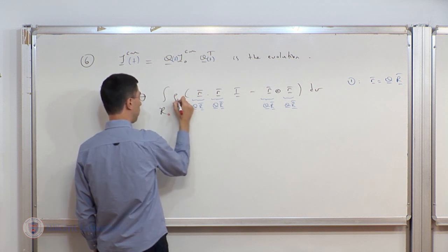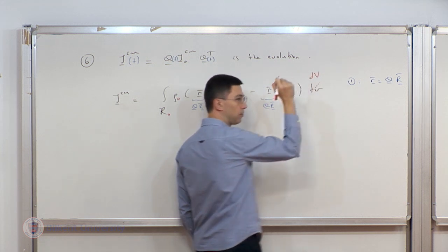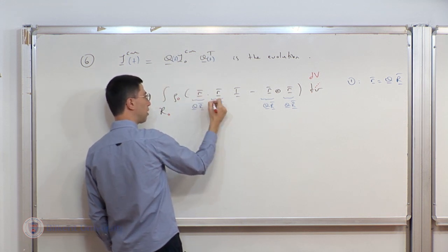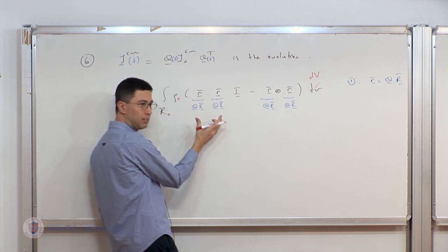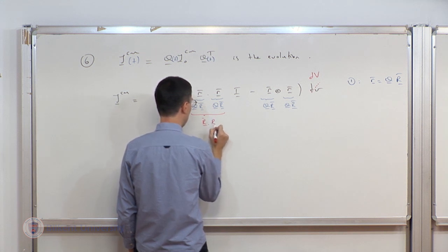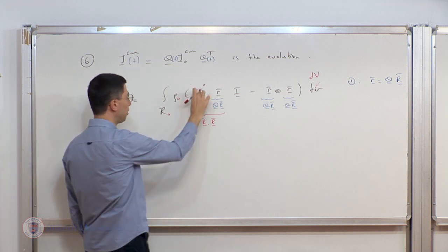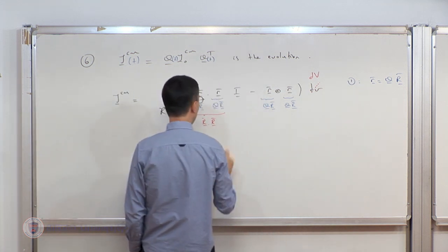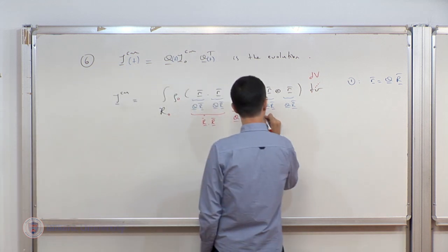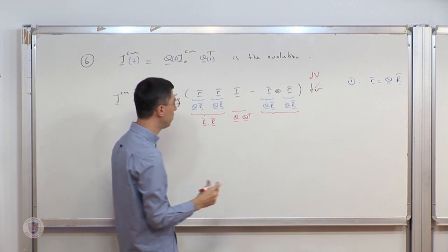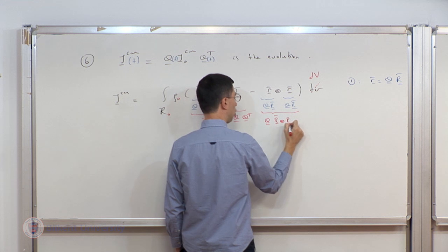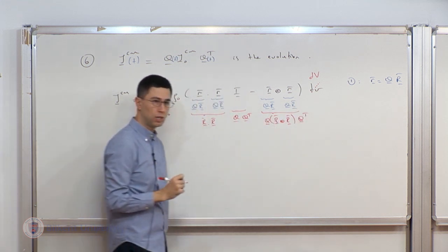I'll put rho-naught and d-capital-V there. Then I notice that if I take a term to the left-hand side of the dot product, it needs to be Q-transpose, but Q-transpose times Q equals identity. So this thing is actually equal to r-bar dot r-bar — which I expect, because rotation does not change the magnitude of elements; this is pure rotation. Finally, I write Q*Q-transpose, which is still identity, and Q goes outside the bond as is, whereas the Q on the right goes outside as Q-transpose.